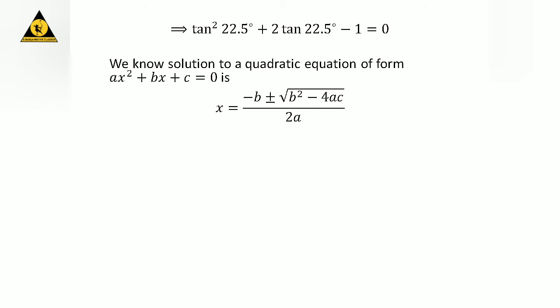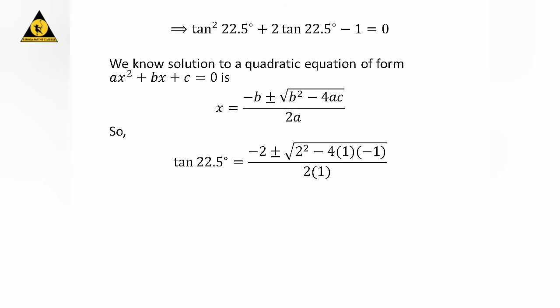The above equation is in the form of a quadratic equation of tangent of 22.5 degrees. We know the roots of a quadratic equation in general form a times square of x plus b times x plus c equals 0 are given by minus b plus or minus square root of b squared minus 4ac upon 2a. Comparing our equation with the general form, we get a equals 1, b equals 2, and c equals minus 1.